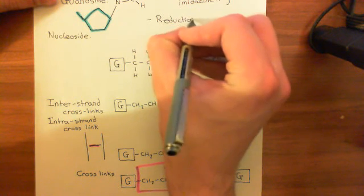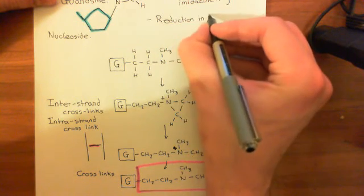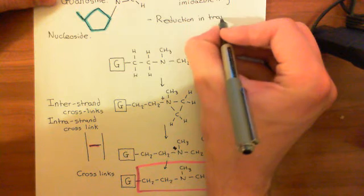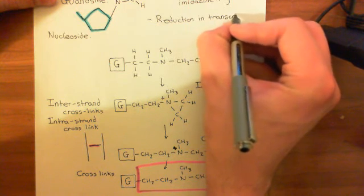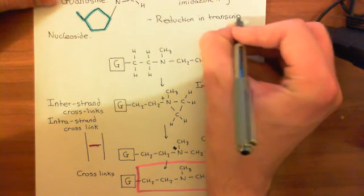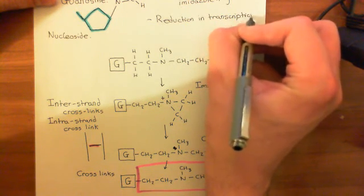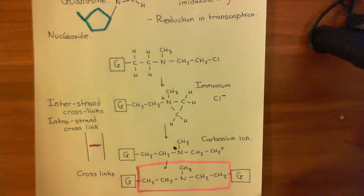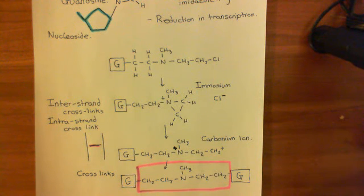And this is happening — I will stress this again — in all cells that this drug gets into. It is not selective for cancer cells. So it's going to stop transcription, and therefore the production of any sort of proteins, in all cells that it gets into and acts on. So you're going to get a reduction in transcription.